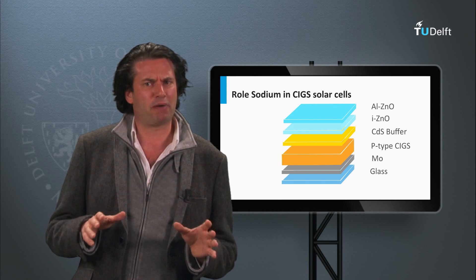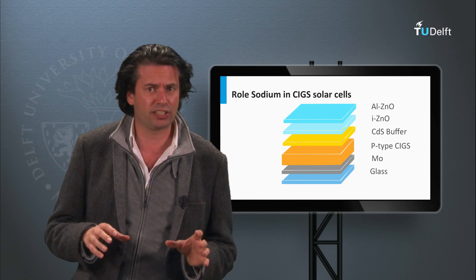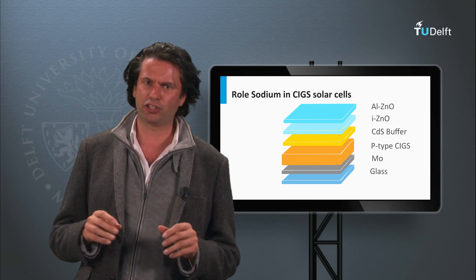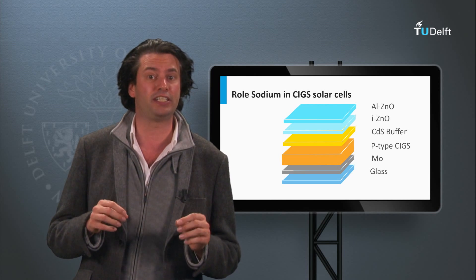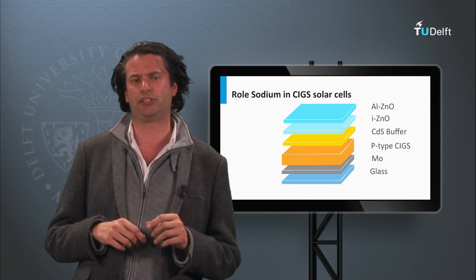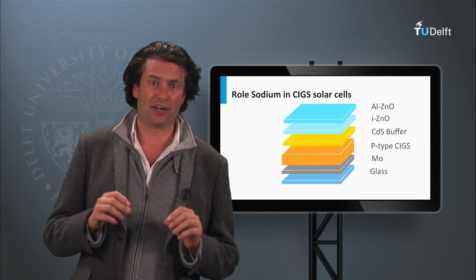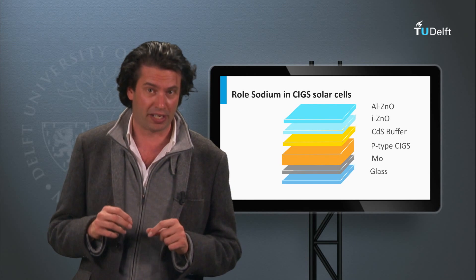One of the important aspects of CIGS solar cells is the role of sodium. Low contamination of sodium appears to increase the conductivity in the p-type CIGS materials. It leads to a welcome texture and an increase in the average grain size.